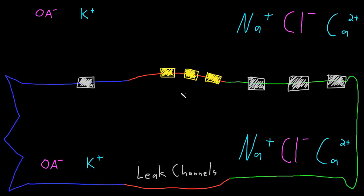It's useful to consider the formation of the neuron resting potential in imaginary steps, but in reality they all occur simultaneously. So first, let's consider a neuron with no resting potential — so it's not more positive outside or more negative inside the membrane.